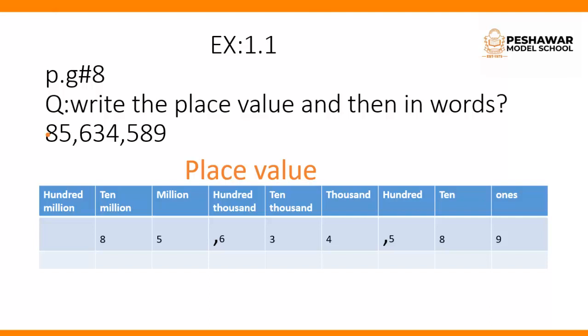Question number one, part number four: 85,634,589. These are the digits which make the number eighty-five million, six hundred thirty-four thousand, five hundred eighty-nine. Now look at the place value chart. From the right-hand side: in the ones place we have 9, so the place value of 9 is ones. Then 8 — the place value of 8 is tens. Then 5 — the place value of 5 is hundreds. This period is called the units period.